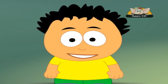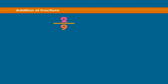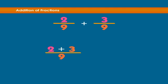Now, let's do one without pictures. Two over nine plus three over nine. Since the denominators are the same, we can simply add the numerator. Therefore, we have the numerator as two plus three and the denominator remains nine. Hence, the answer is five over nine.